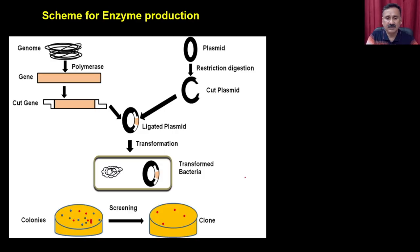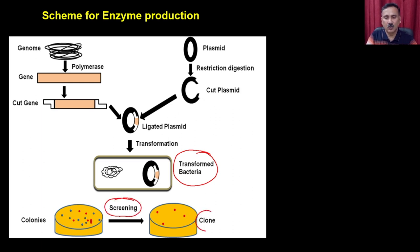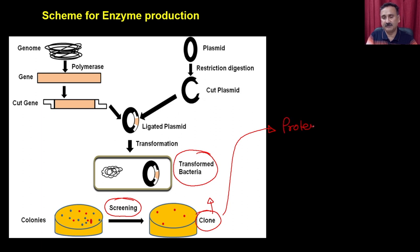So what we have discussed so far is that you are going to get the transformed bacteria or the transformed host that you are going to put it for the screening. And once you got the screened clone-containing host cells, this clone can be used for the protein production or the enzyme production.